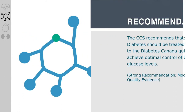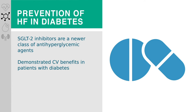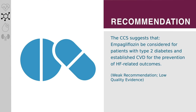The cardiovascular benefit of an SGLT2 inhibitor in the treatment of diabetes was demonstrated with empagliflozin in the EMPA-REG OUTCOME trial. Empagliflozin was the first diabetes medication to show a reduction in heart failure hospitalization. The CCS suggests that empagliflozin be considered for patients with type 2 diabetes and established CVD for the prevention of heart failure-related outcomes.